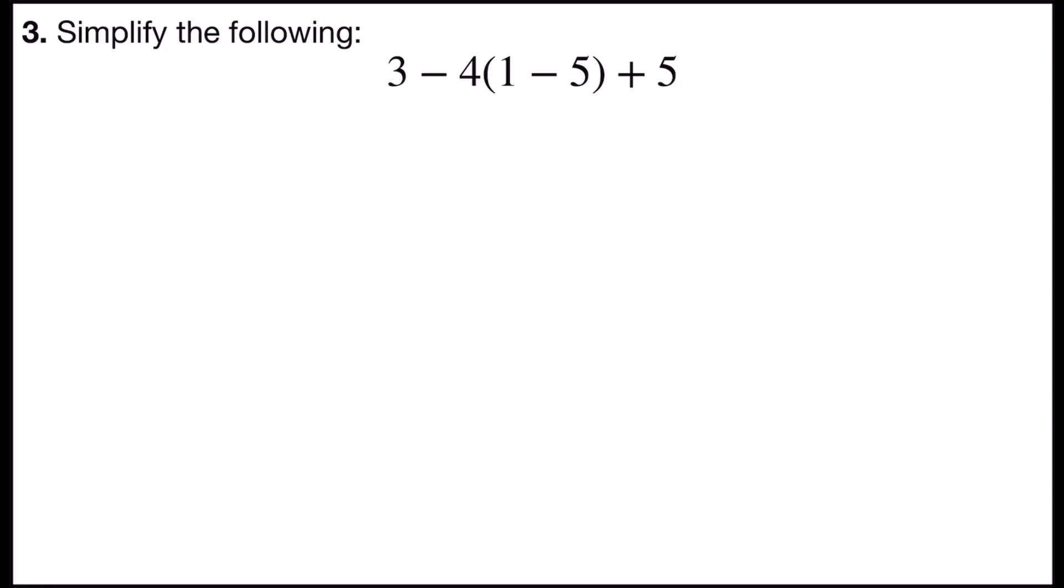The order of operations says first we work grouping symbols, which normally are parentheses. Then we work exponents. Then we work multiplication and division as they appear from left to right in the problem. And last we work addition or subtraction as they appear from left to right in the problem.